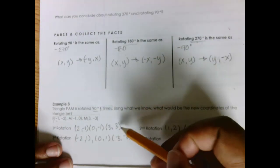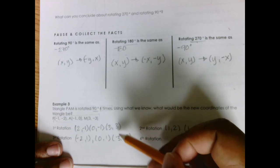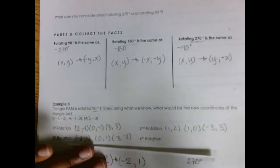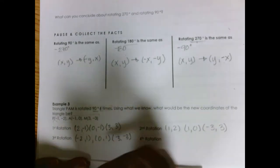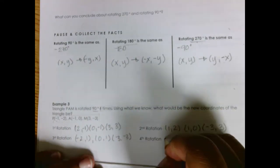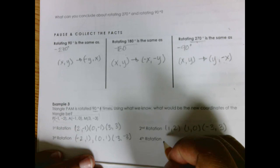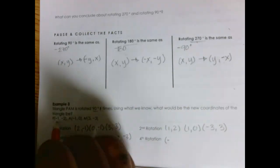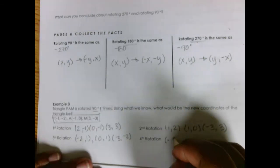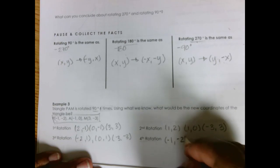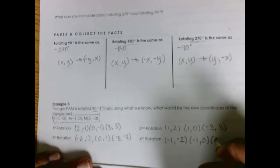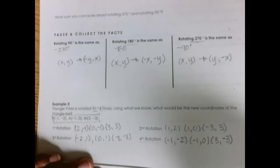Pay attention to how these coordinates switched — it's pretty cool. The fourth rotation is 360 degrees, which is a full circle, so the coordinates end up being the same exact numbers from the beginning. So those are: negative 1 comma negative 2, negative 1 comma 0, and 3 comma negative 3. And we're all done.